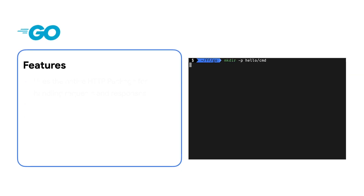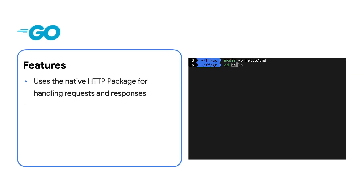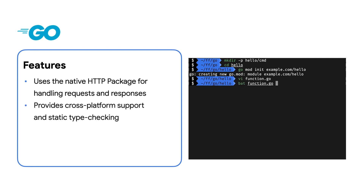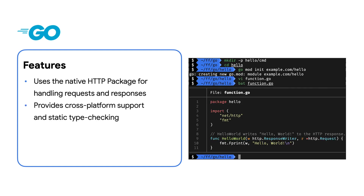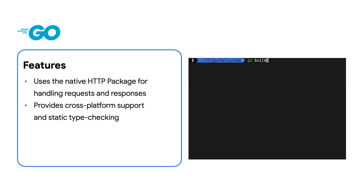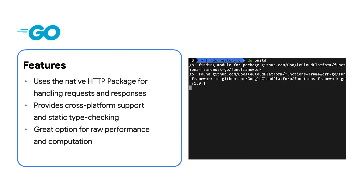The Go Functions Framework uses the native HTTP package for handling requests and responses, provides excellent cross-platform support and static type checking for your function. It's a great option for raw performance and computation.